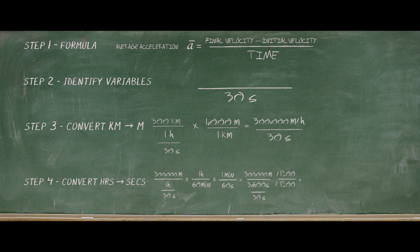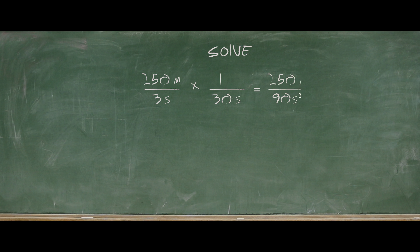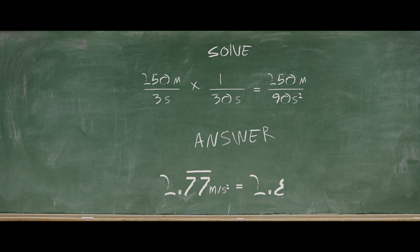Once we simplify our equation, we get 250 meters over 3 seconds. We multiply that by 1 over 30 seconds, and then we get 250 meters over 9 seconds squared. So the answer is 2.7 repeating, and when rounded the answer is 2.8 meters per second squared.